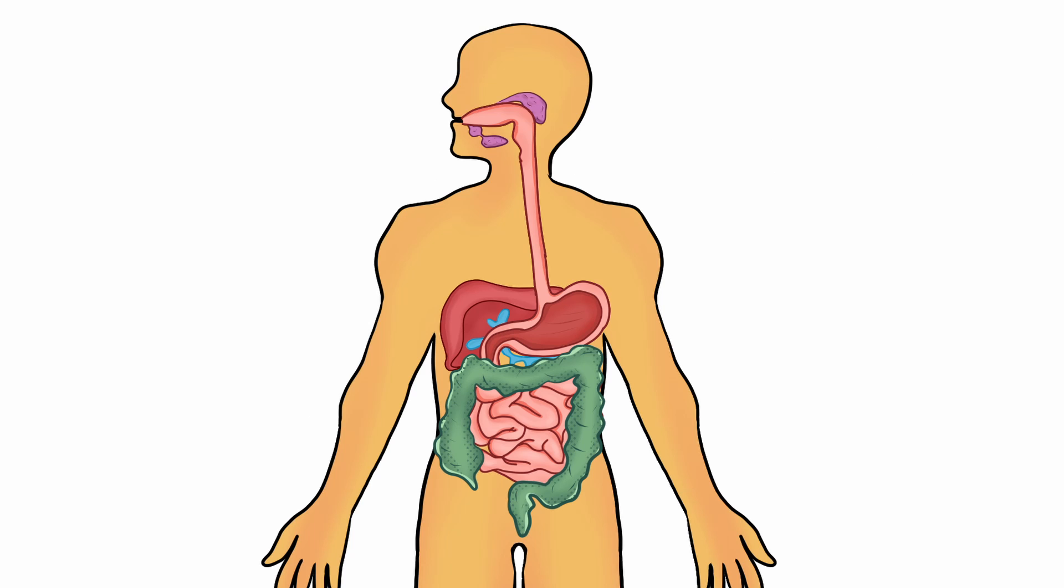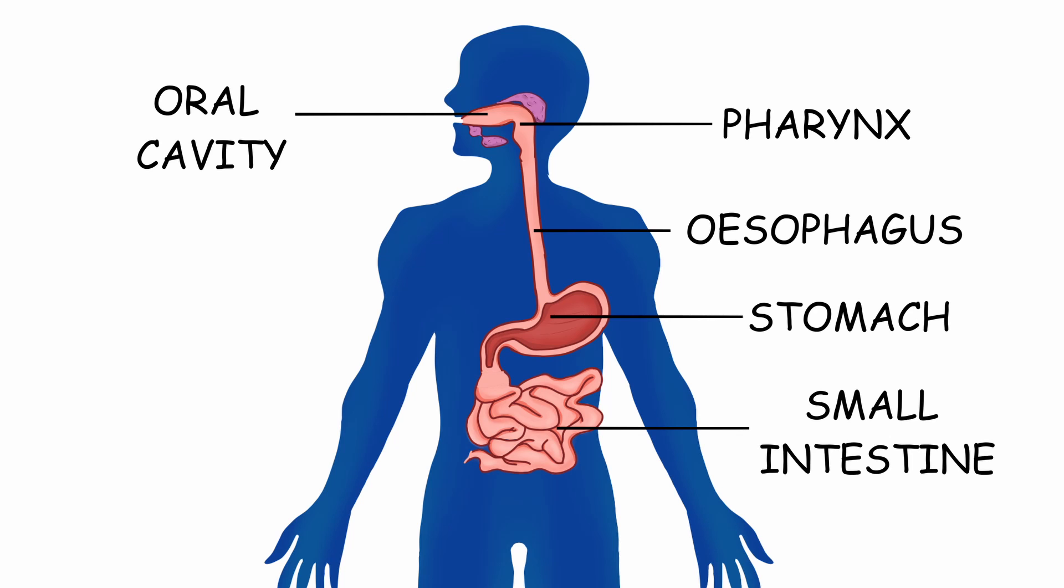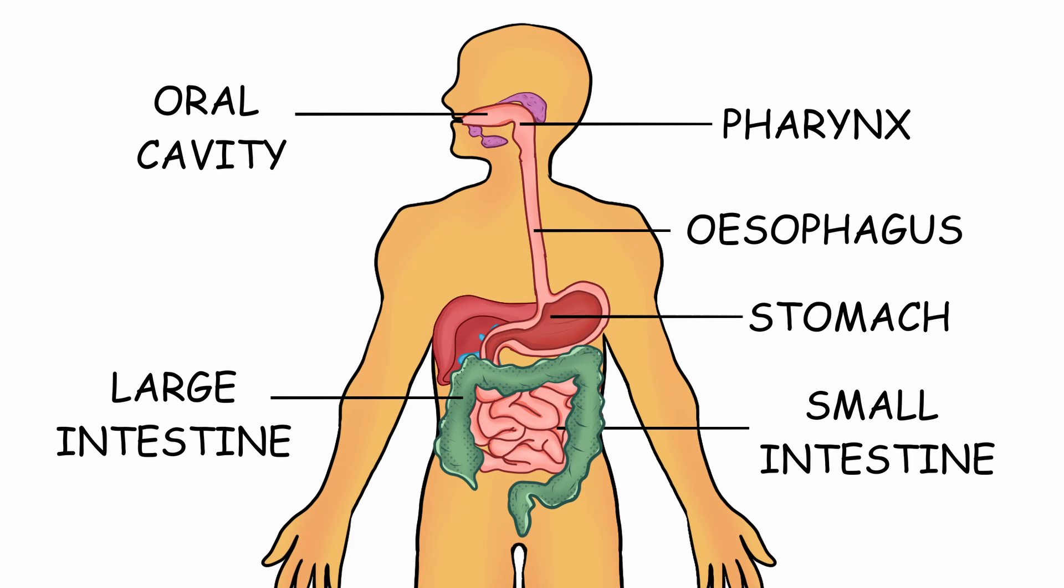Which are the oral cavity, the pharynx, the esophagus, the stomach, the small intestine, and the large intestine. As you might have guessed, this is the order through which the food travels down our body.